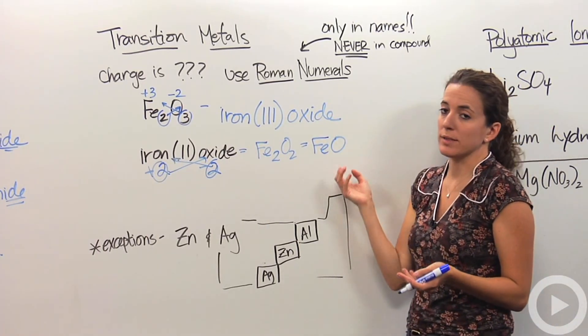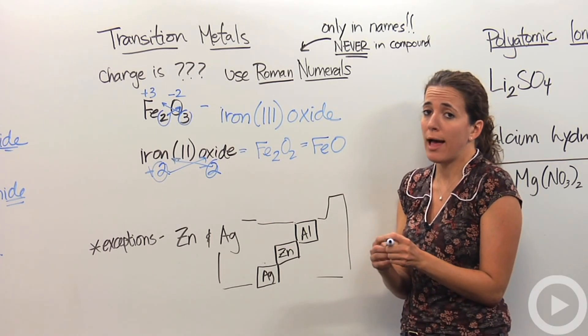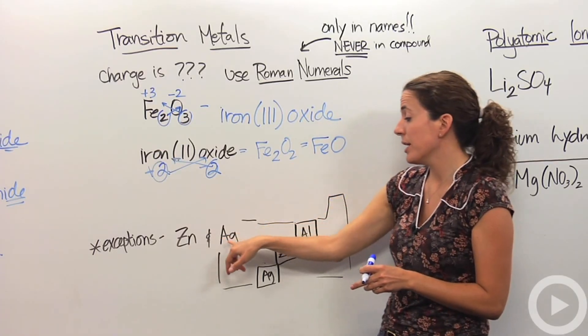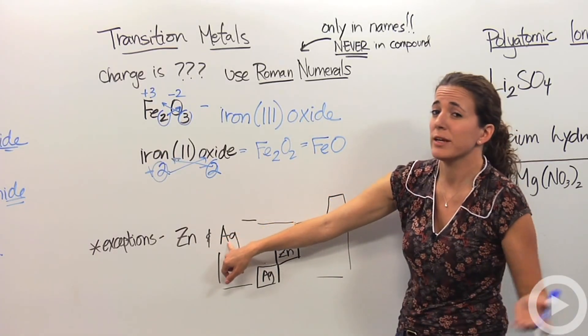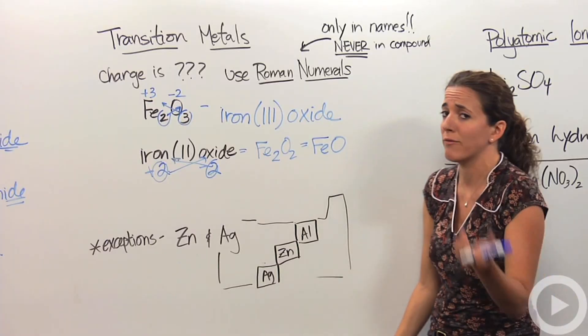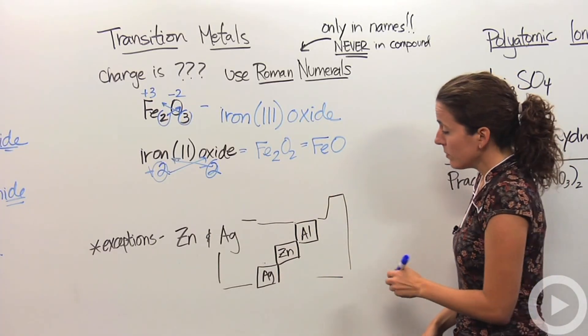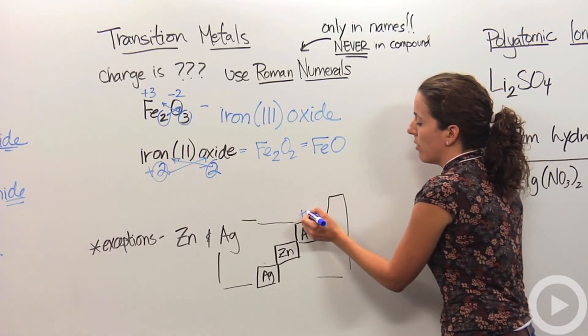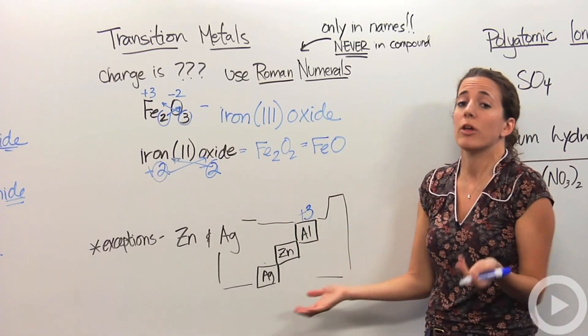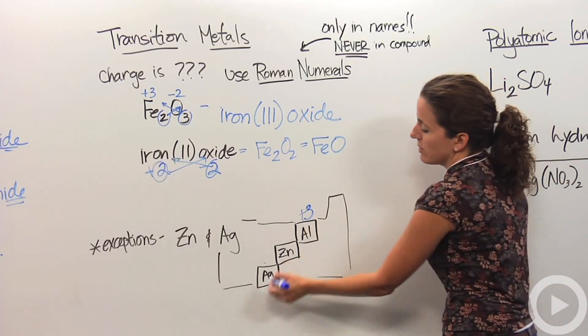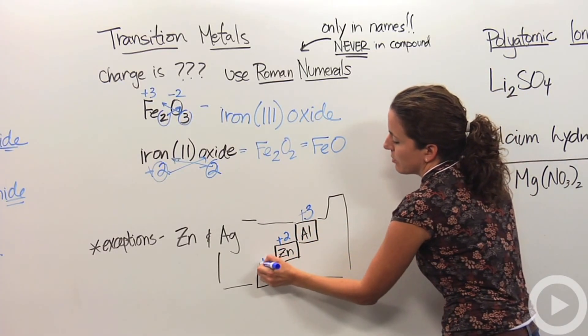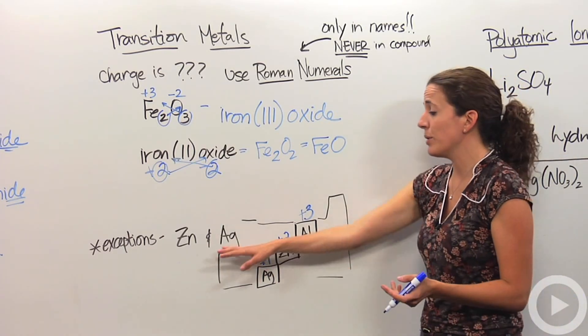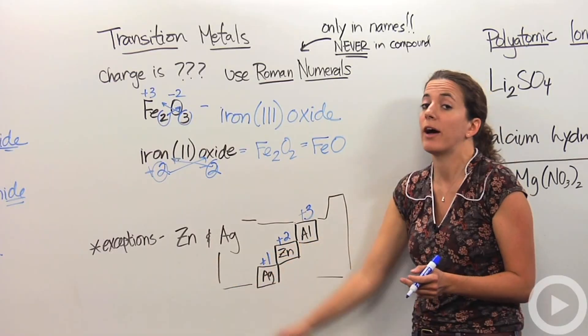There are exceptions in the transition metals. There are some transition metals that actually do have a definite charge. And those are zinc and silver. Zinc is always a plus 2 charge. Silver is always a plus 1 charge. There is a small trick you can remember. If you look at your periodic table, we know aluminum is in group 3, so it's a plus 3 charge. But if you go down diagonally, this is plus 2, this is plus 1. Just an easy way to remember that zinc is plus 2 and silver is plus 1. So we don't have to use roman numerals when describing those guys because they're defined for us.